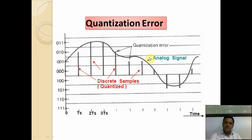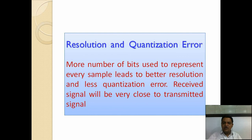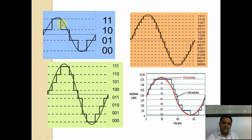More bits used to represent every sample leads to better resolution and less quantization error, and the received signal will be very close to the transmitted signal. If the step size is too large and cannot follow the information-bearing signal, either slope overload or granular noise is generated. That will be covered in the next video.